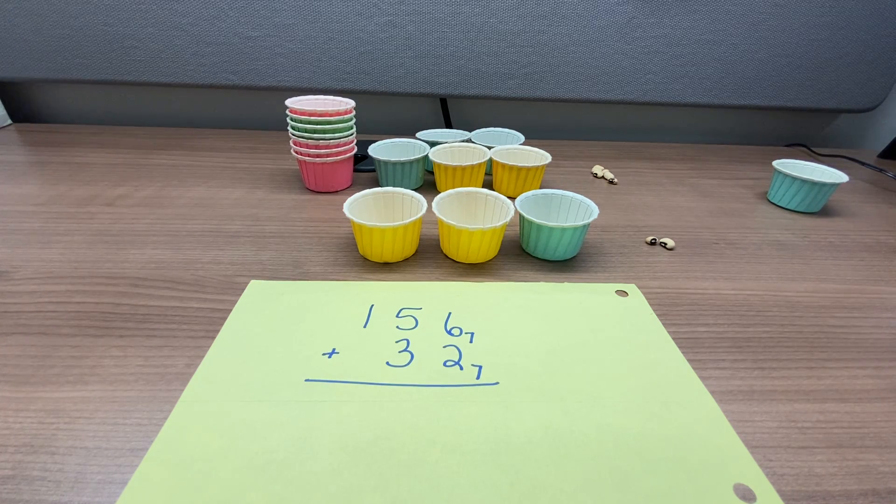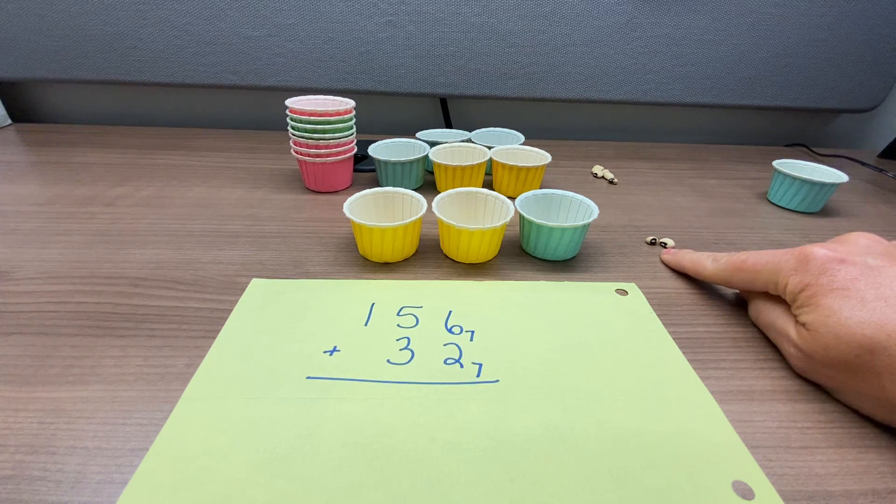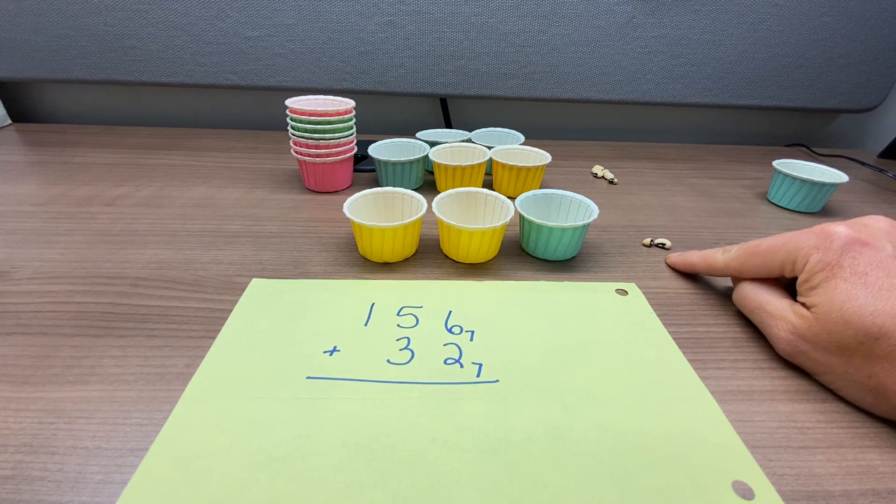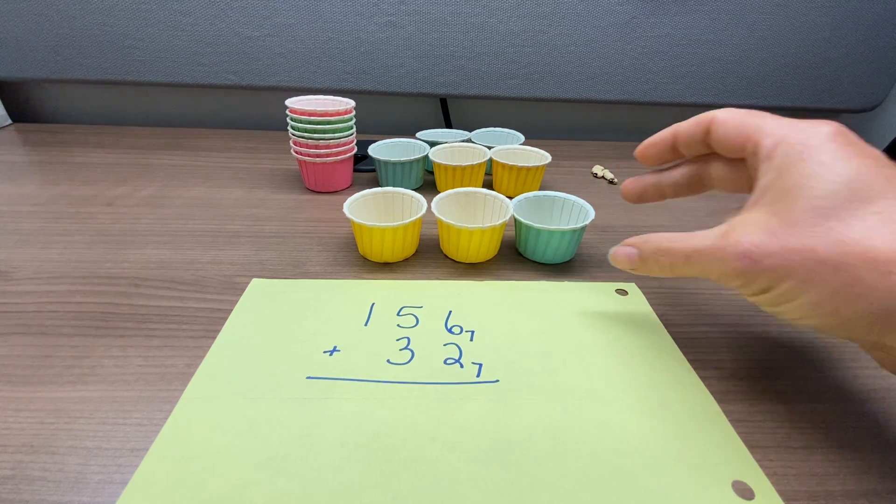Hello, this will be base 7 addition using beans and cups. There's beans that are singles here for the ones place. Then we have 7 beans and a cup for the sevens place.